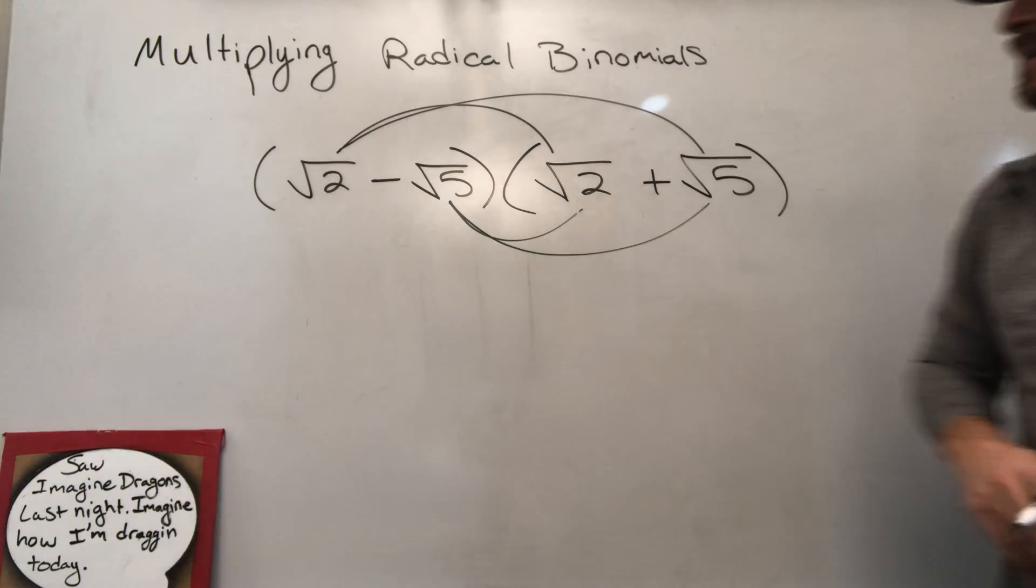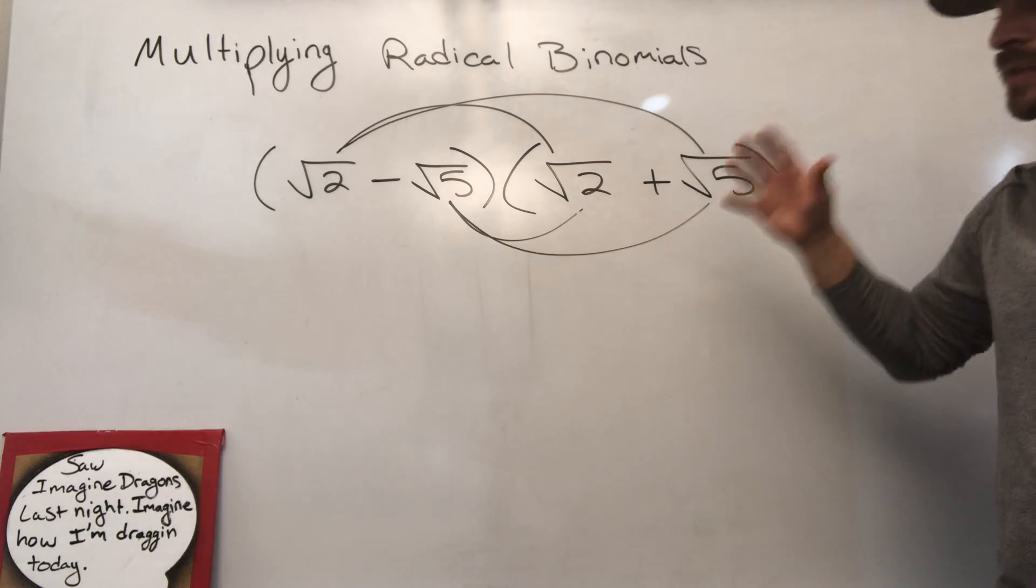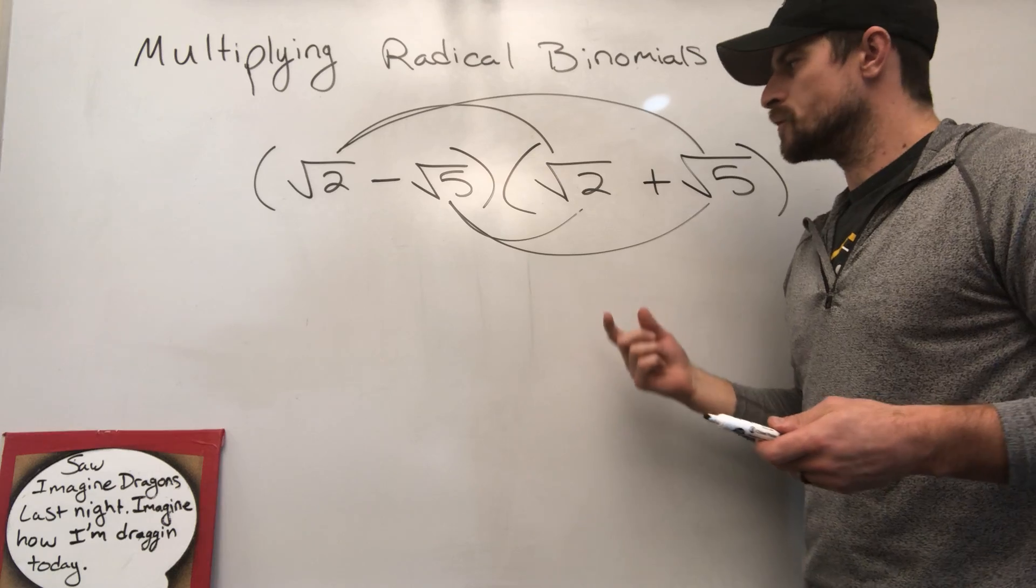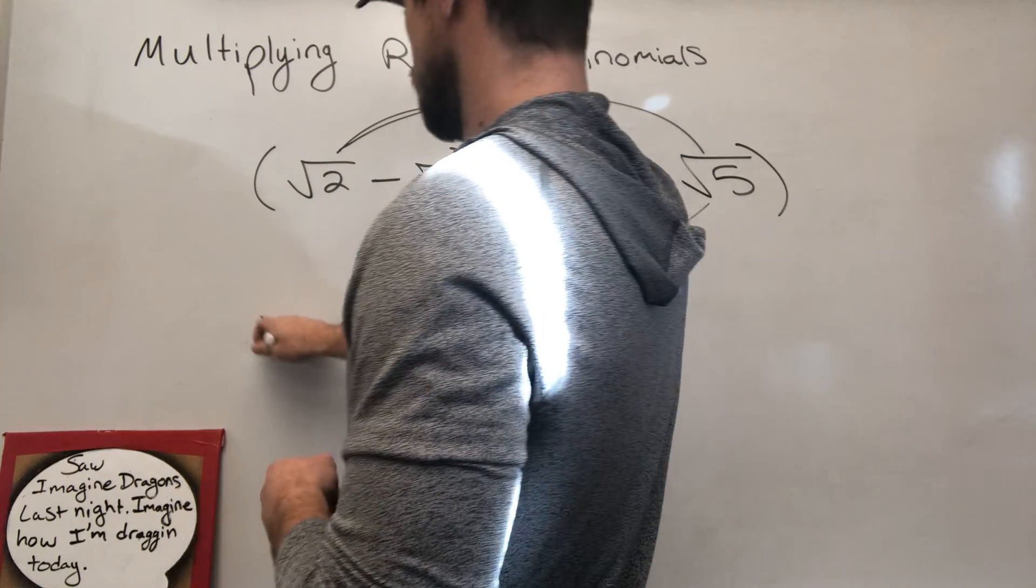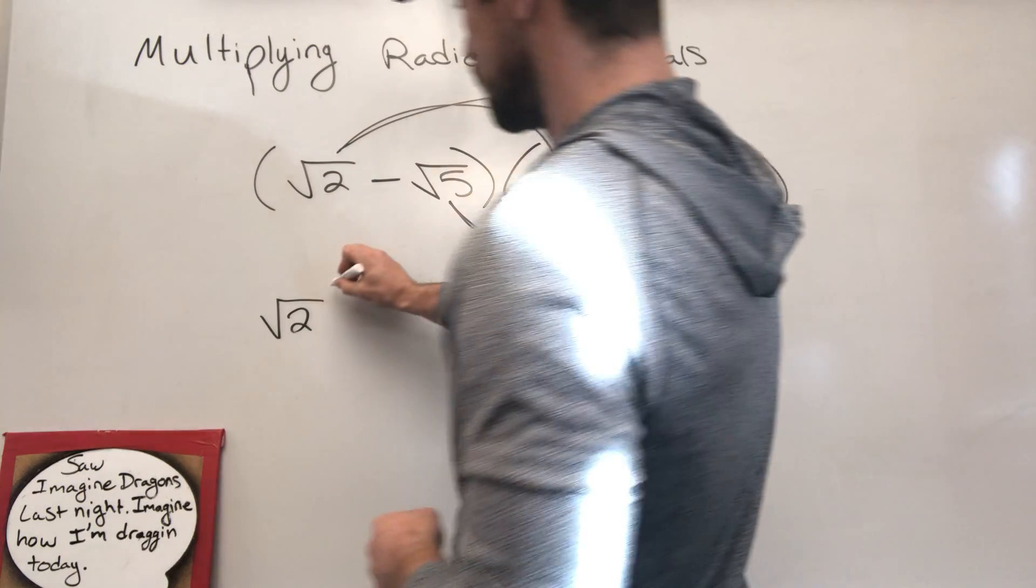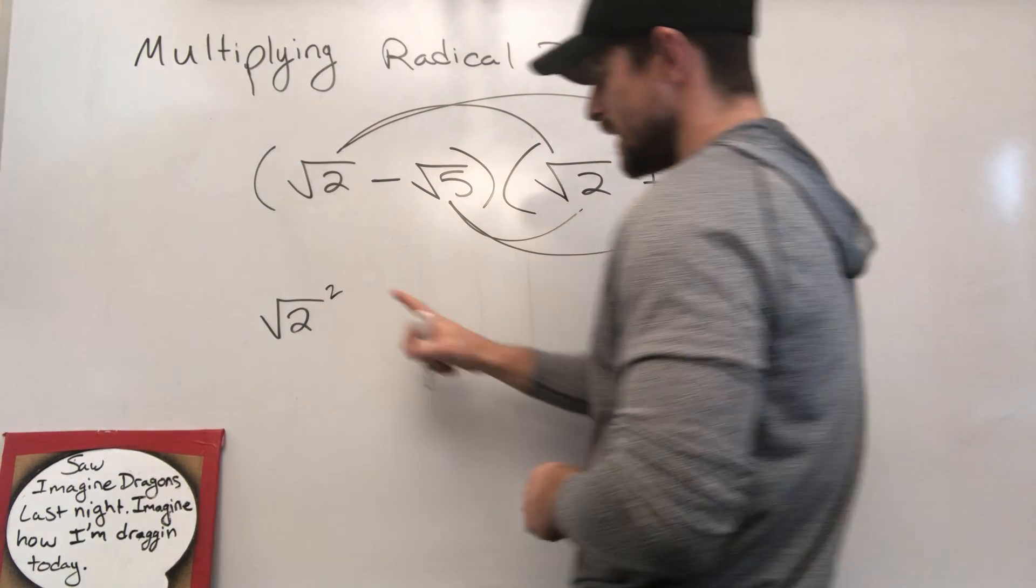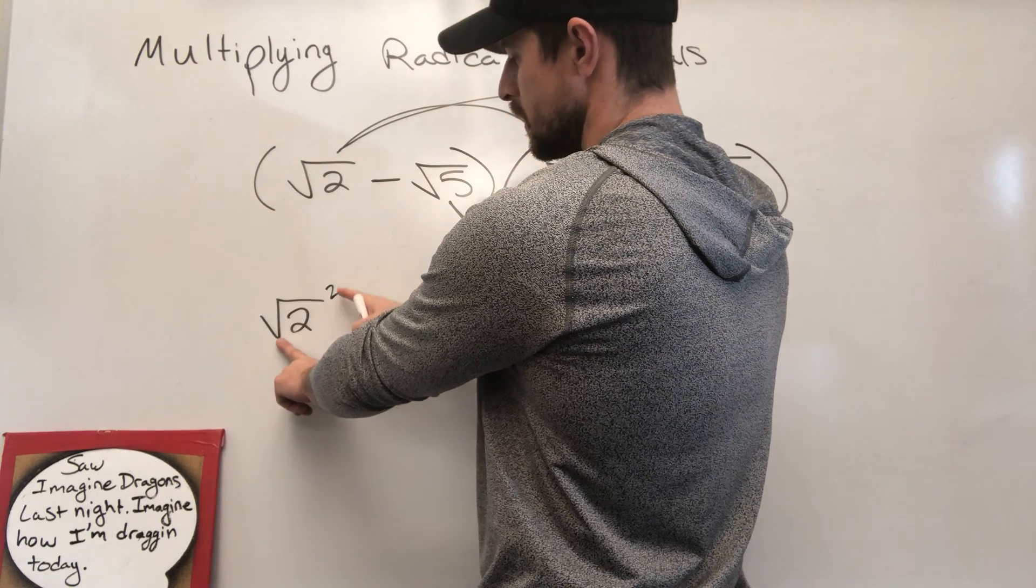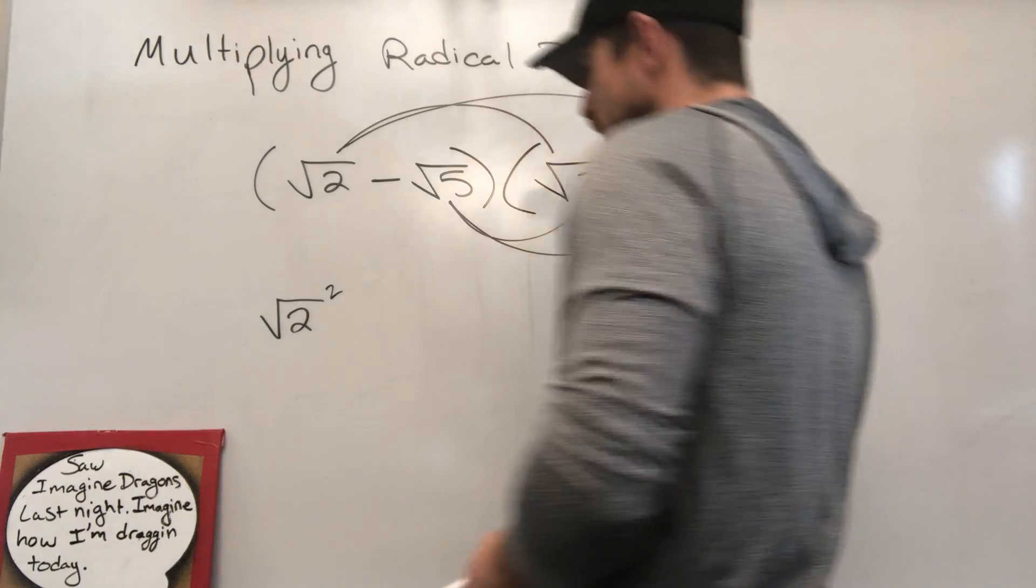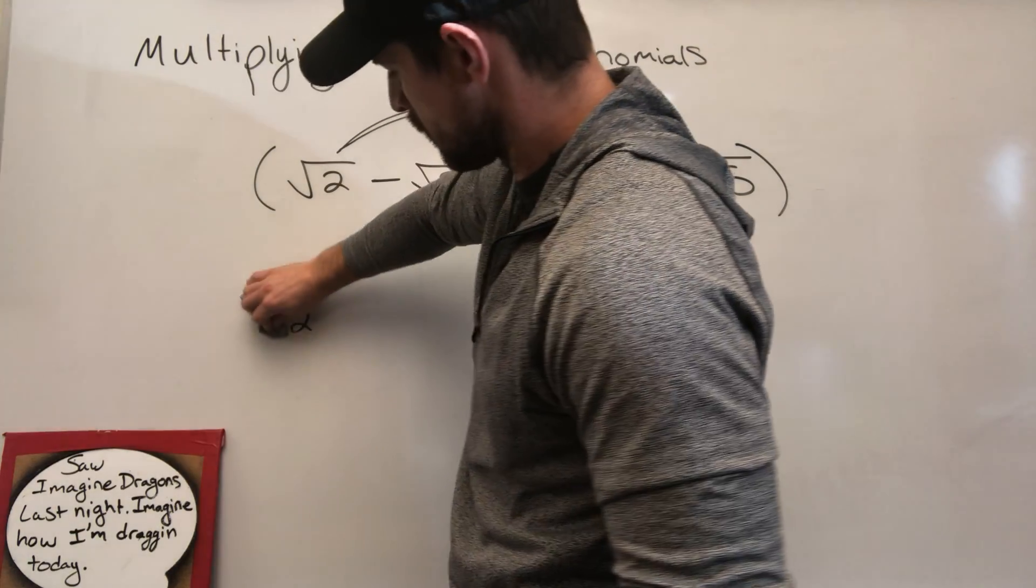Okay, so how are we going to attack this? We're going to say square root of 2 times the square root of 2. Well, if you think about it, the square root of something means this times itself. So if you were to square the square root of 2 and multiply it by itself, essentially you're doing this. Now, know that the square root and an exponent of 2 are inverse operations. They're going to eliminate one another, leaving you at just 2.